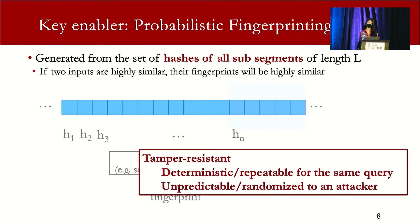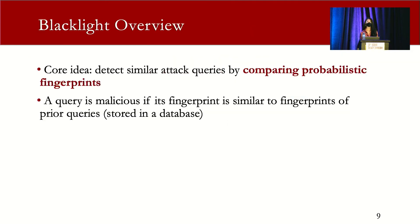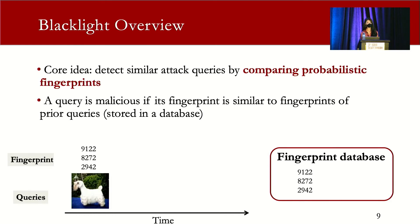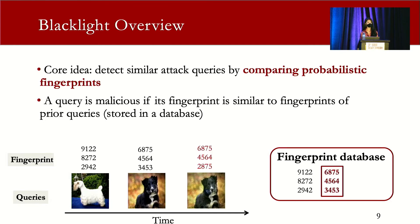With this in mind, let's take a look at the overview of BlackLight. The core idea is to detect similar attack queries by comparing their probabilistic fingerprints. A query is malicious if its fingerprint is similar to some prior fingerprints stored in a database. For example, we have a fingerprint database here. When queries come in, we calculate the fingerprint and save it to the database. At the same time, if we find a similar fingerprint in the database, we tag this query as an attack query and reject it without sending any outputs from the model.